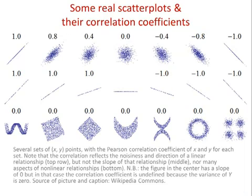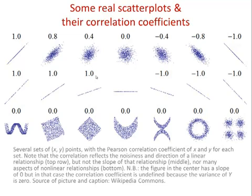Here are some examples of real scatter plots. Look at the top line — you can see the different correlation coefficients and their associated scatter plots, and notice that the magnitude of the correlation is entirely dependent on how scattered the dots are. In the second line, different slopes are shown but the level of scatter is exactly the same — there's no scatter in any of them. Even a shallow slope is still a correlation of 1, because correlations involve standardising both variables so they essentially turn into z-scores. Correlations are completely independent of the scales you're using — the critical thing is the amount of scatter.